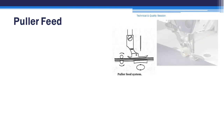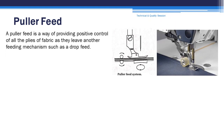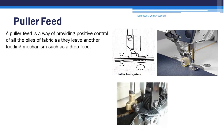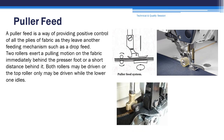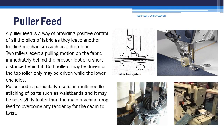Puller feed. A puller feed is a way of providing positive control of all the plies of fabric as they leave another feeding mechanism such as a drop feed. Two rollers exert a pulling motion on the fabric immediately behind the presser foot or a short distance behind it. Both rollers may be driven, or the top roller only may be driven while the lower one idles. Puller feed is particularly useful in multi-needle stitching of parts such as waistbands, and it may be set slightly faster than the main machine drop feed to overcome any tendency for the seam to twist.